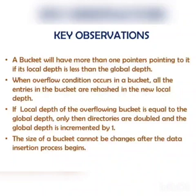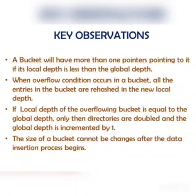In the bucket splitting process, if the local depth of the bucket to be split equals the global depth of the directories, then the directory size must be doubled — that is, global depth is incremented by one, and the local depth of the two new buckets split from the overflowed bucket is also incremented by one. For example, if global depth was 2, directory size would be 4; if local depth is also 2 during overflow, then global depth and local depth both become 3 and directory size becomes 2³ = 8. However, if local depth is less than global depth during overflow, then only the local depth is incremented to accommodate the data.